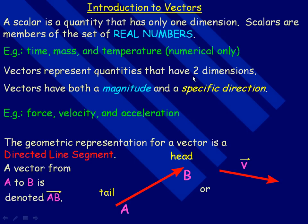Now vectors represent quantities that have two dimensions. Vectors have both a size, we often call a magnitude, and a specific direction. For example, examples of vectors are force, velocity, and acceleration because they have a specific size and they have a specific direction.